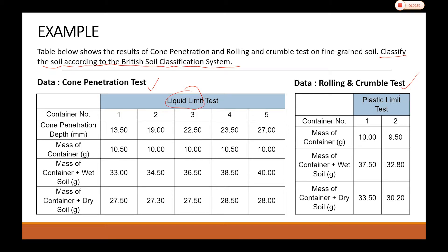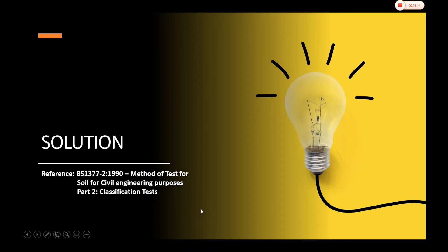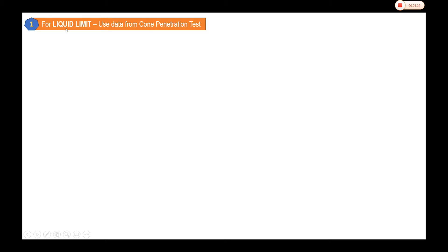The rolling and crumble test objective is to get the plastic limit. For this first part of the video, we will go into detail on the cone penetration test to get the liquid limit — how we are going to analyze this cone penetration data. For the solutions of this exercise, whether for the liquid limit or the plastic limit, we will refer to BS 1377 Part 2, 1990, the method of test for soil for civil engineering purposes. Let's start with the liquid limit, referring to the cone penetration test data.